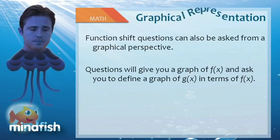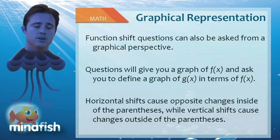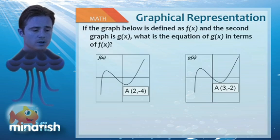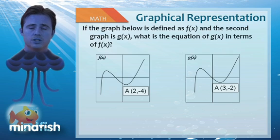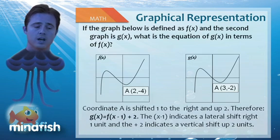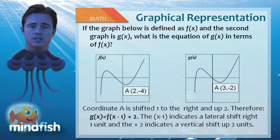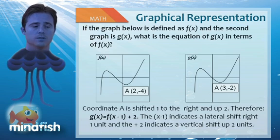Graphical representation: I want you to understand that an f of x graph can be displayed and they can ask you for the function of a new graph after a shift — same concept we just talked about, but now visually. If you look at the graph on the lower left, f of x has a point at 2, negative 4. When the graph shifts to g of x, that point becomes 3, negative 2. Going from 2 to 3 is a shift right 1, and going from negative 4 to negative 2 is a shift up 2. So g of x equals f of x minus 1, plus 2 — the minus 1 creates the shift right 1, and the plus 2 creates the vertical shift up 2.